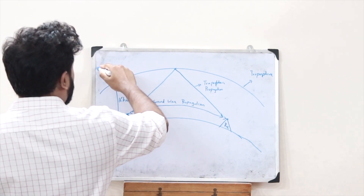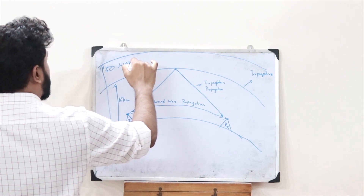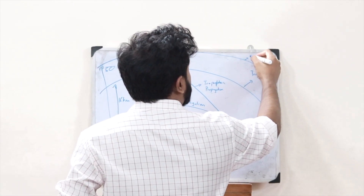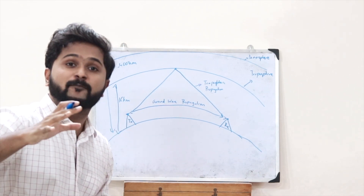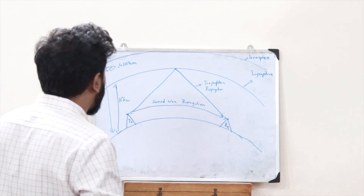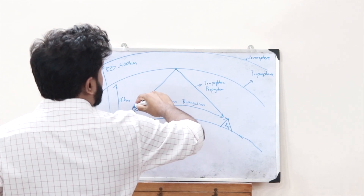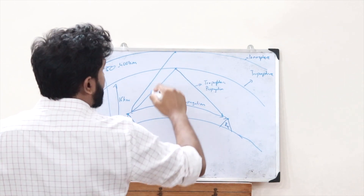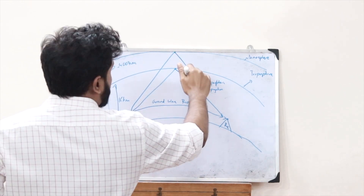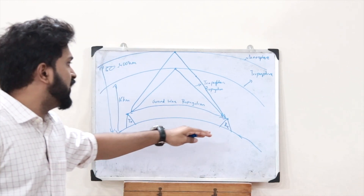At a distance of 50 to 400 kilometers from the surface of the earth we have what you call the ionosphere. The third mode of propagation is ionospheric propagation. In ionospheric propagation, the transmitter antenna sends electromagnetic radio waves onto the ionosphere, and when they reach there, both reflection and scattering happen. As a result, the electromagnetic radio waves get reflected back onto the receiver and are received there.